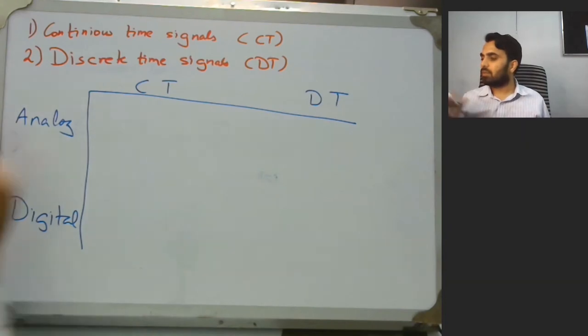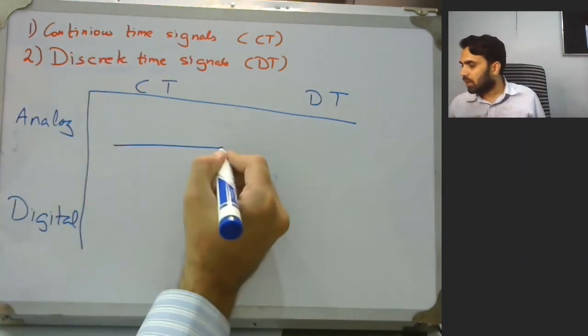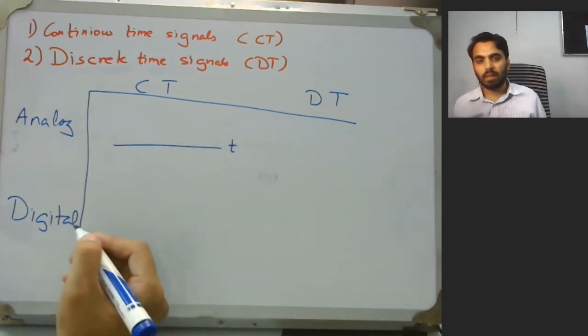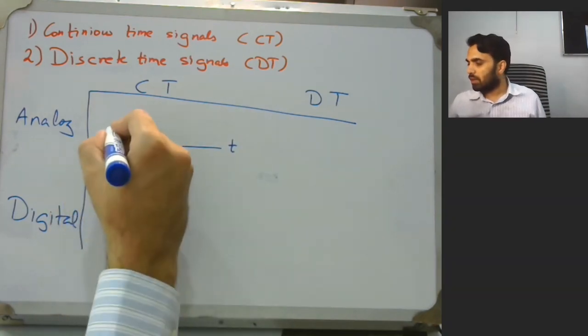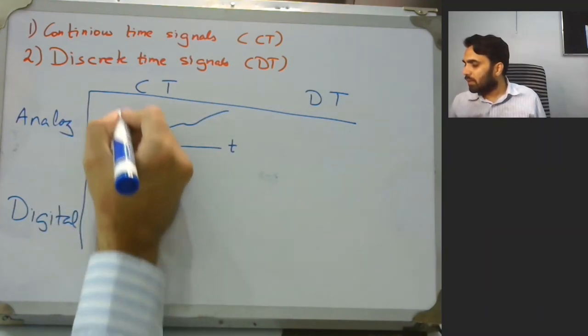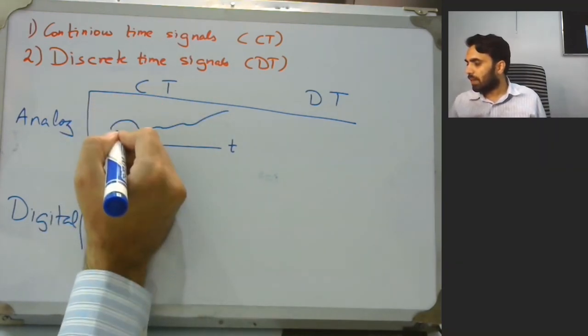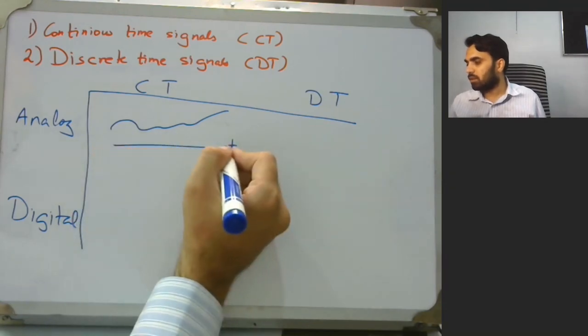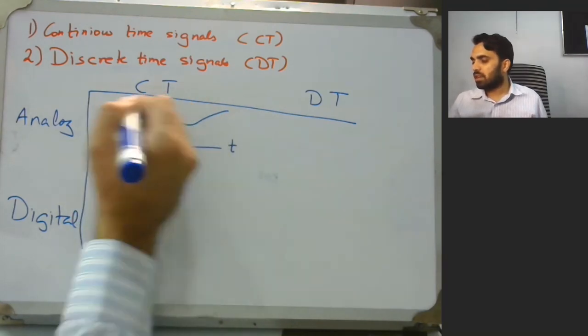Let us look into an example of a continuous time analog signal. We have a time domain T and for that we could have any signal. This signal can have infinite amplitudes and it is continuous in time, so that is why it is called continuous time analog signal.